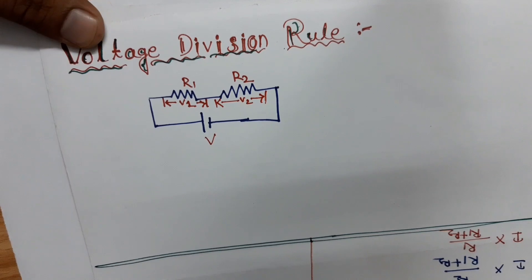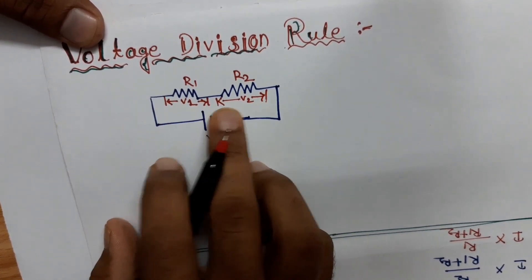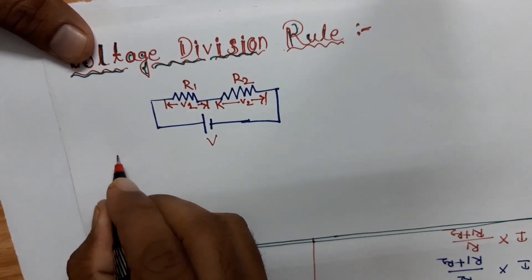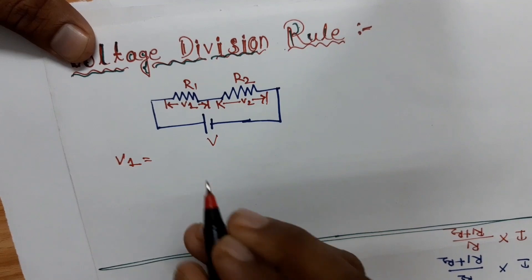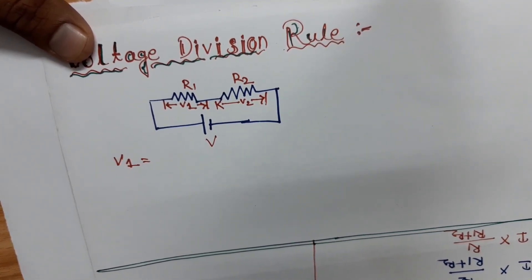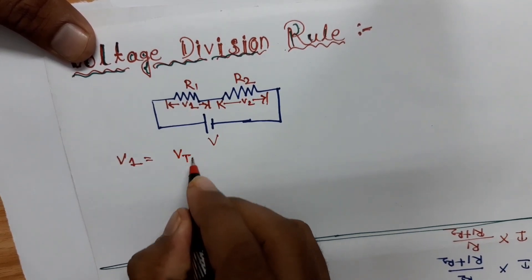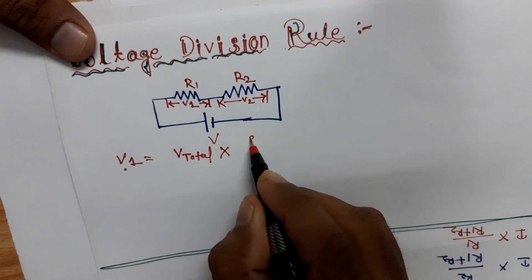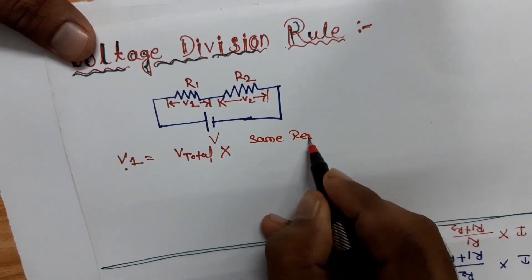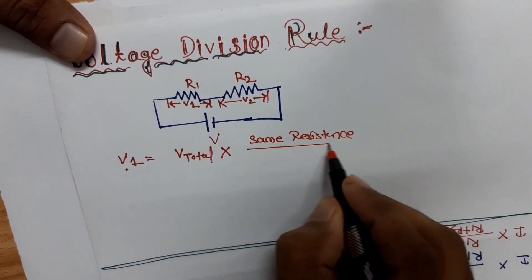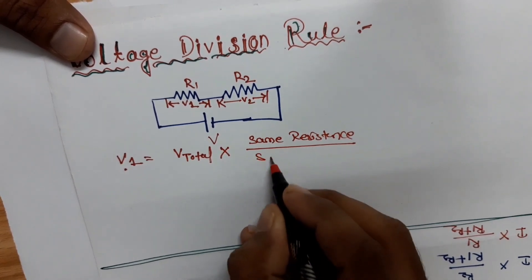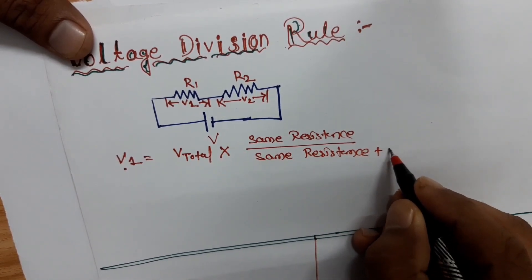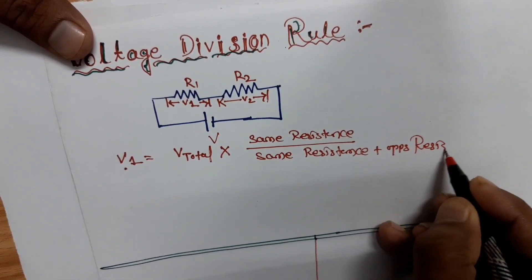Our objective is to find voltages V1 and V2. In the series case, voltage is divided. We apply the voltage division rule to find V1: V1 equals the total voltage V multiplied by the same resistance, divided by the sum of the same resistance plus the opposite resistance.